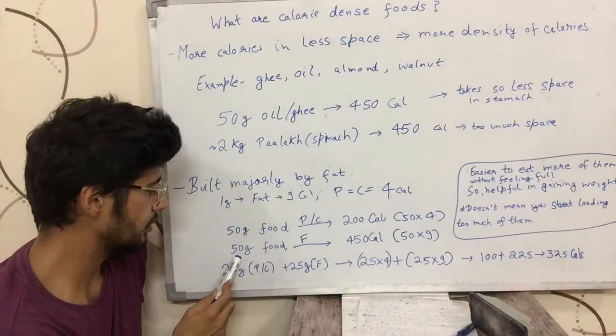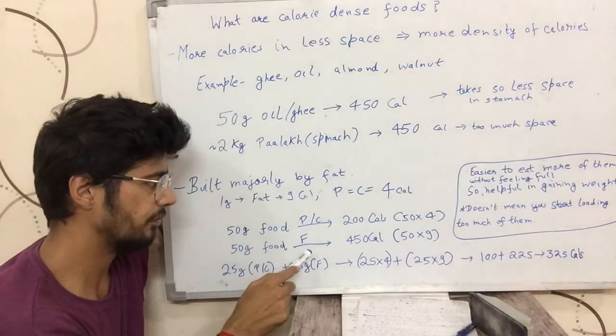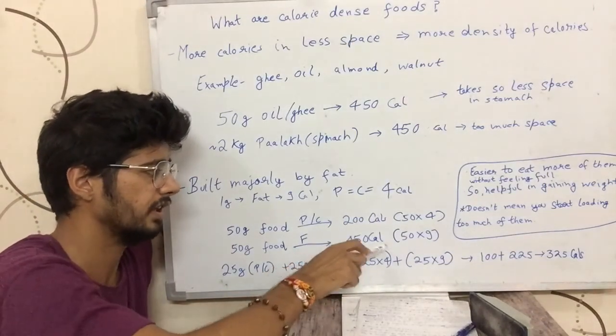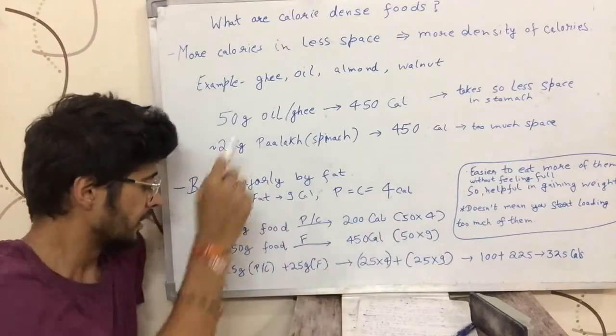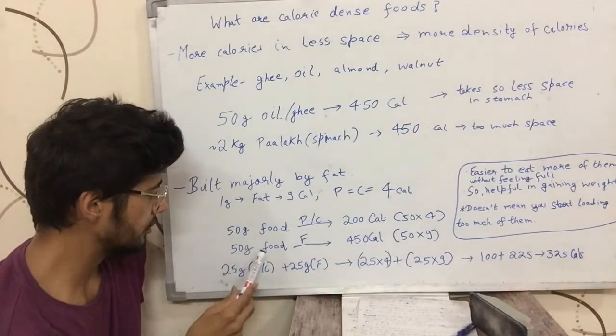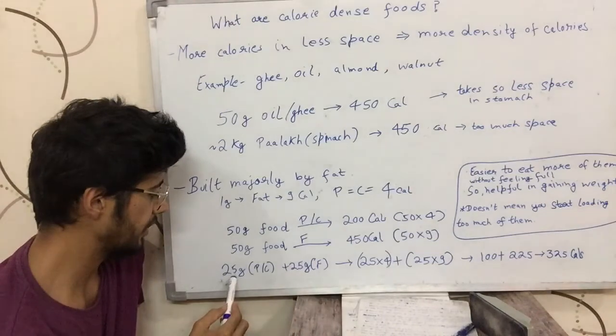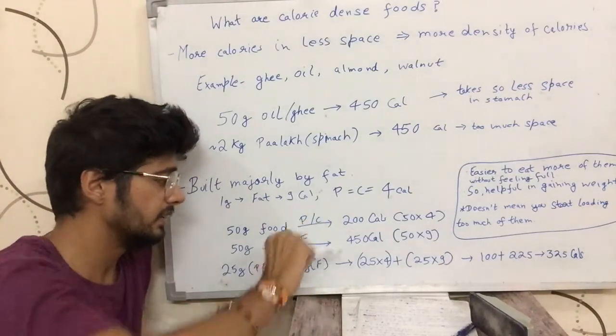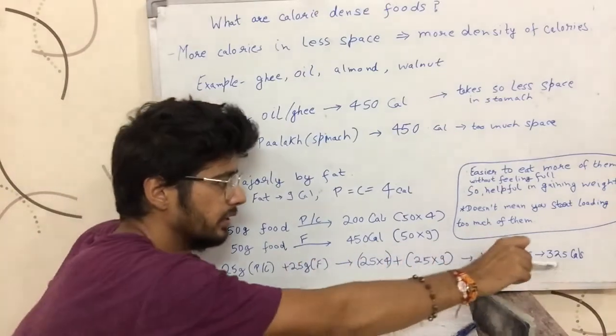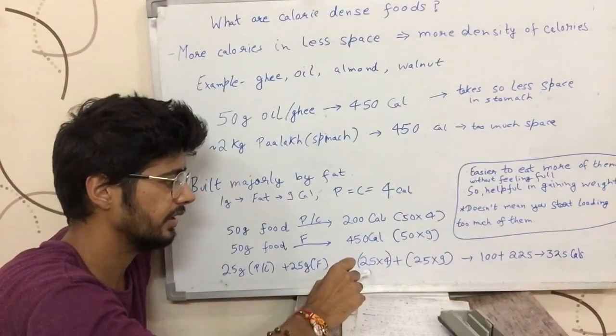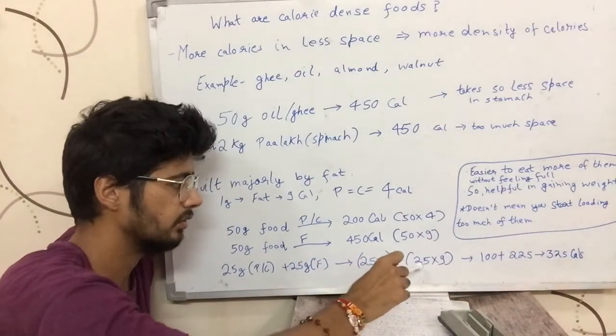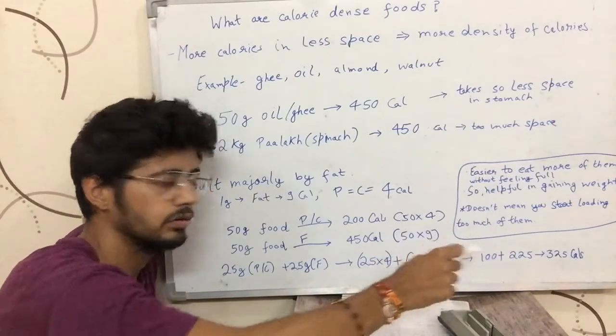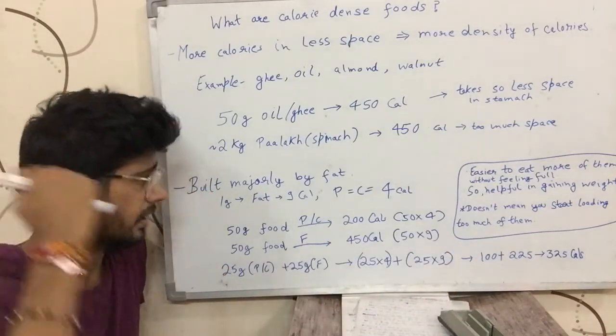If those 50 grams of that food comes from fat, then the food would have 450 calories, 50 cross 9. If out of the 50 grams of that food, 25 grams are from protein and 25 grams are from fat, then the total calories would be 325, 25 from protein and 25 from fat, so 325 total calories.